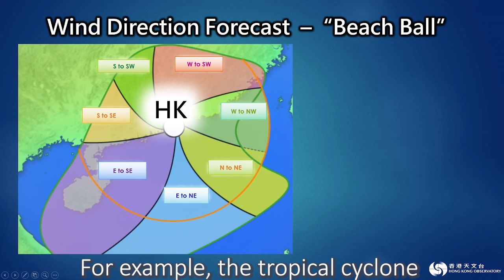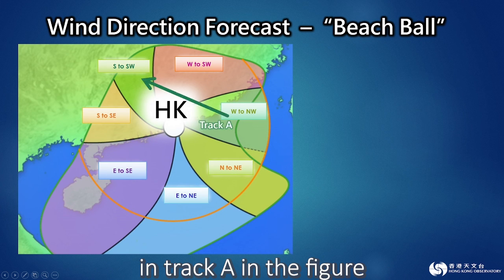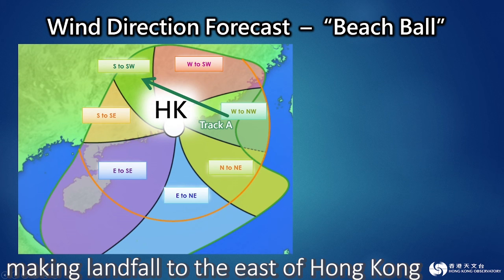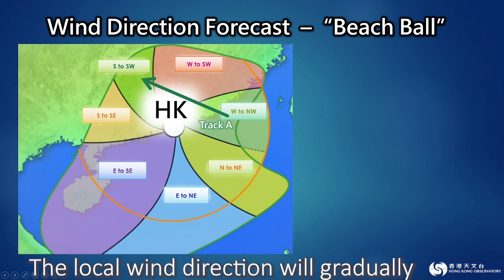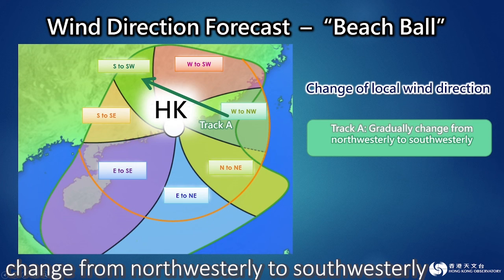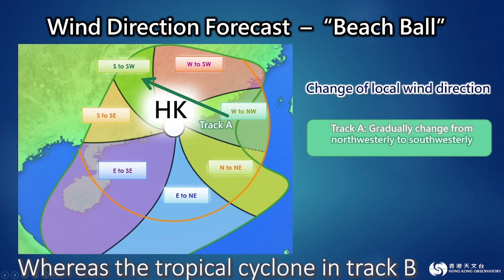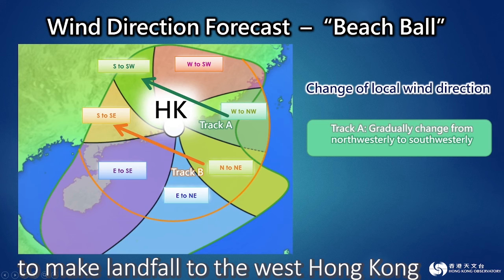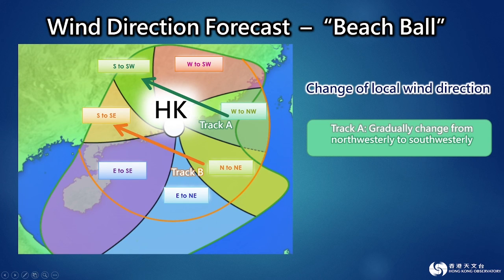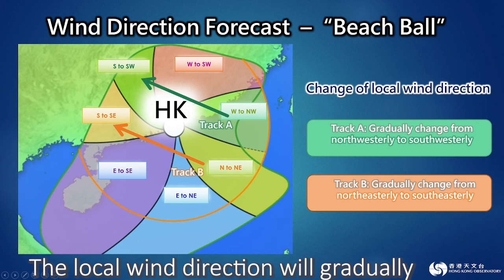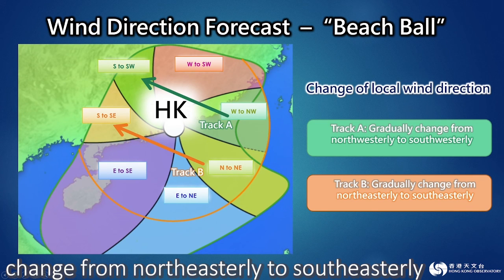For example, the tropical cyclone in track A in the figure is moving west-northwest, making landfall to the east of Hong Kong. The local wind direction will gradually change from north-westerly to south-westerly. The tropical cyclone in track B is adopting a west-northwestward track to make landfall to the west of Hong Kong, and the local wind direction will also gradually change from north-westerly to south-westerly.